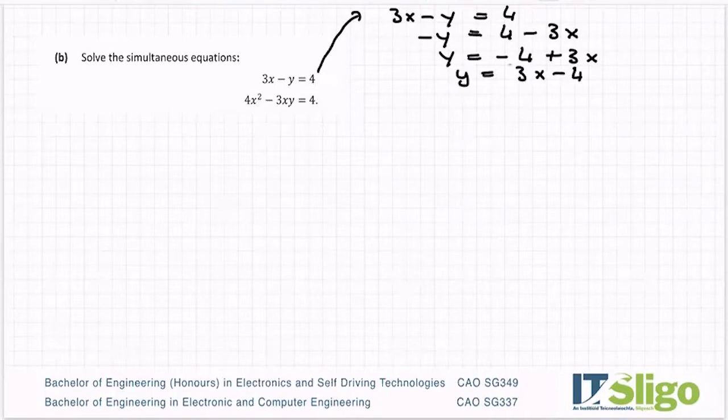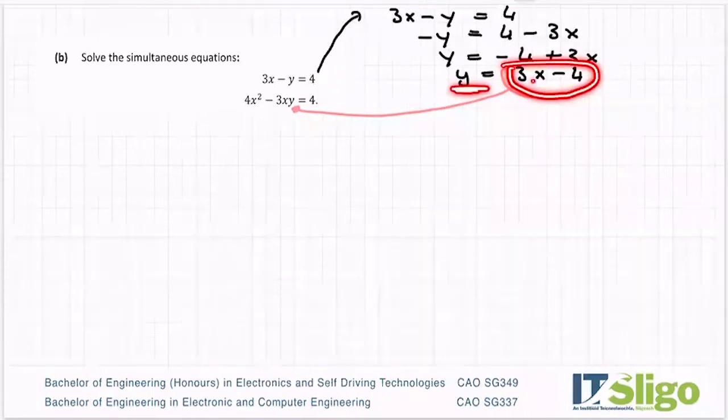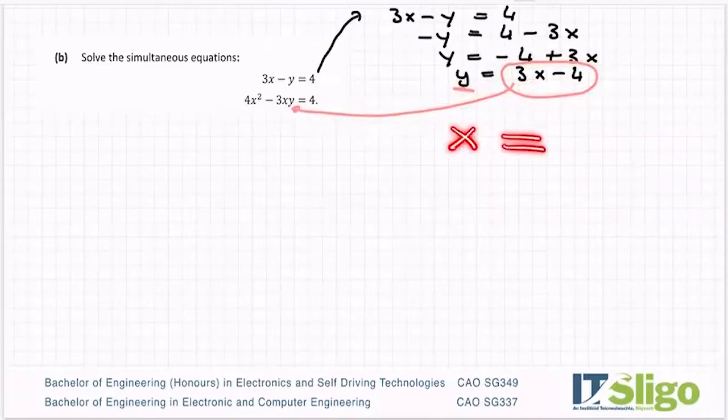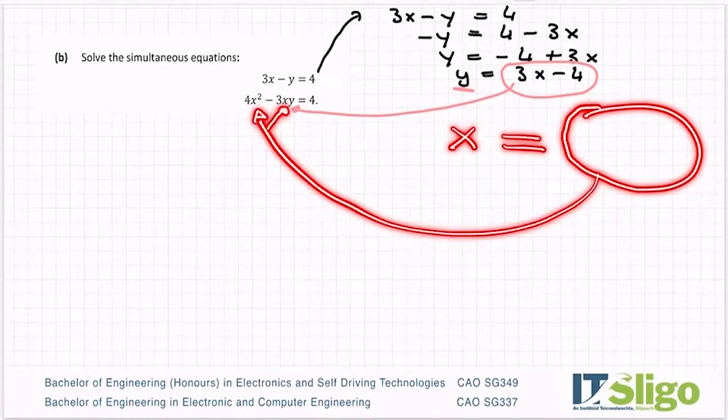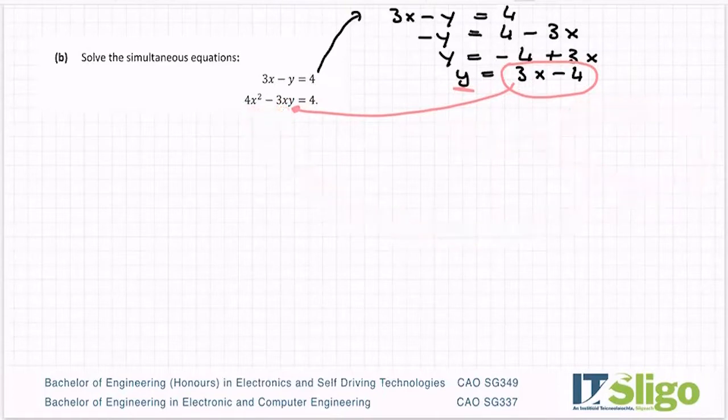So let's do that again. Let's take the 3x minus y is equal to 4. Let's write it in terms of y. Let's change the sign all the way across. And let's just write it as 3x minus 4. What you do is then you take that 3x minus 4 and everywhere there's y in the other one you sub it in. So this is how we link the two equations to each other. And then we solve them at the same time. So to repeat, everywhere there was y, I'm now going to put in 3x minus 4.